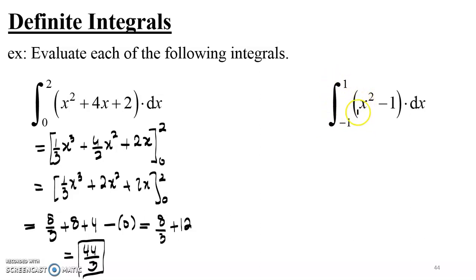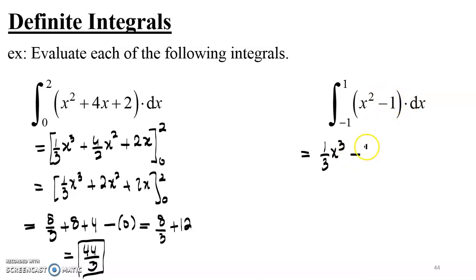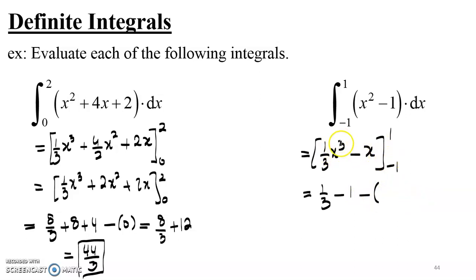Similarly, if we integrate x squared minus 1 between negative 1 and 1: the antiderivative of x squared is one third x cubed, minus — the constant 1 has antiderivative x. So that's one third x cubed minus x, evaluated between negative 1 and 1. Applying upper bound minus lower bound: it's 1 third minus 1, minus negative 1 third — because negative 1 cubed is negative 1, giving negative 1 third — and negative into negative 1 gives plus 1. So it's negative 2 thirds minus negative 2 thirds, which gives negative 4 over 3.